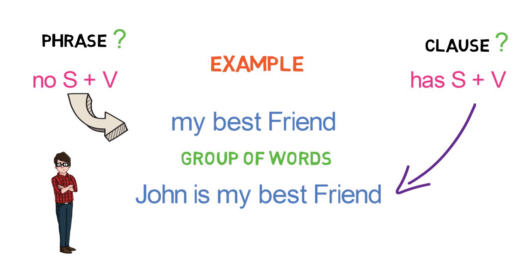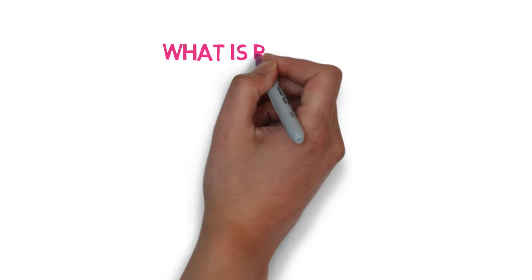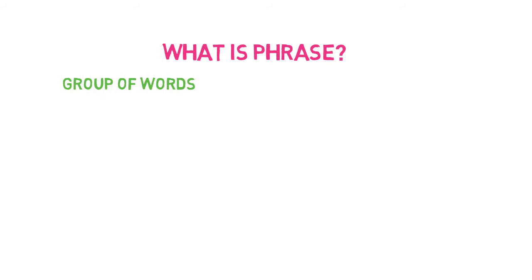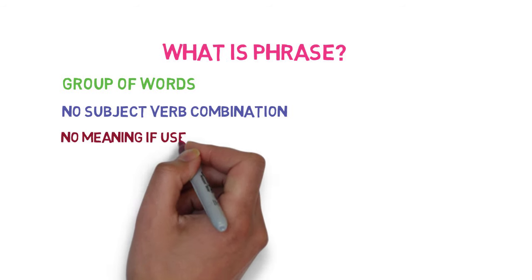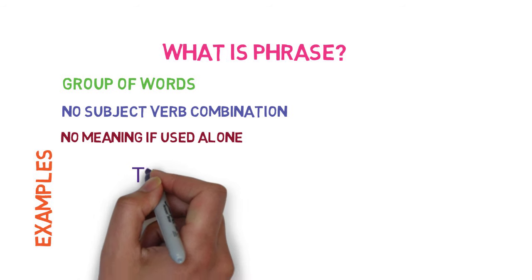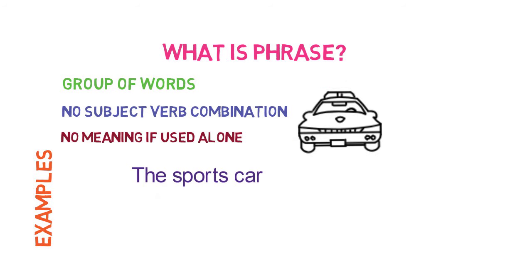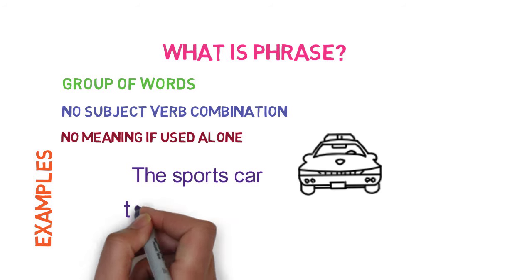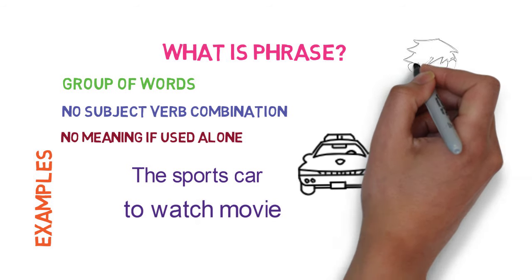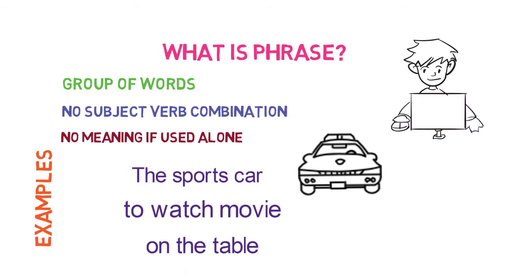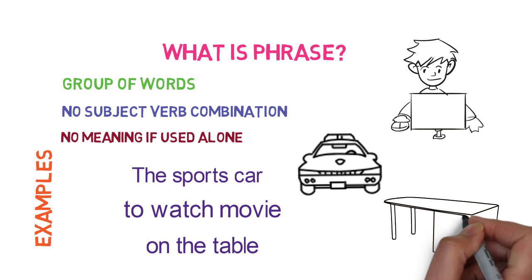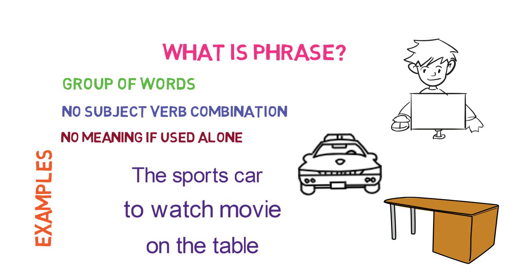Now let's define both of them properly with more examples to make things clear. First, we will go with phrases. A phrase is a group of words with no subject-verb combination, and it doesn't have any meaning if it is used alone. For example: 'the sports car' — a group of words with a noun and an adjective; 'watch movie' — a group of words having a verb; 'on the table' — a group of words having a preposition and a noun. So, phrases are actually groups of words which are used as a single unit in a sentence.